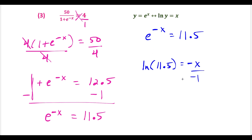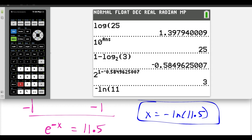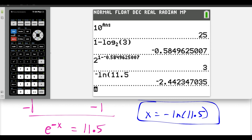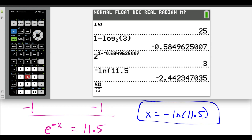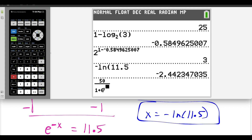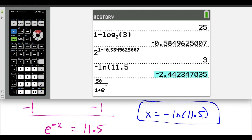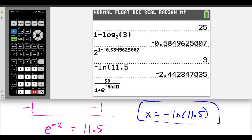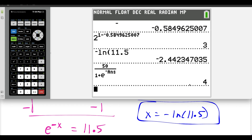Now to solve for x, divide both sides by negative 1. So x equals negative natural log of 11.5. Let's check our answer — this is our decimal solution. Pressing alpha, y equals, enter, we type in the original fraction: 50 divided by 1 plus e to the negative x, substituting our solution for x using second minus for the previous answer. Notice that it does equal 4, which was the right side of our equation. Our solution checks out.